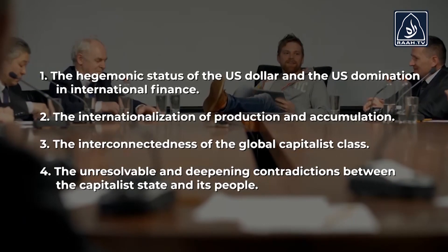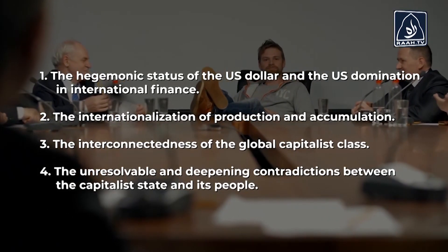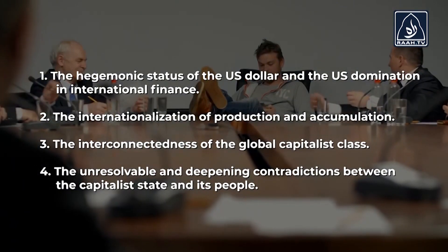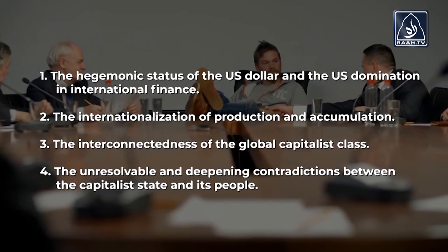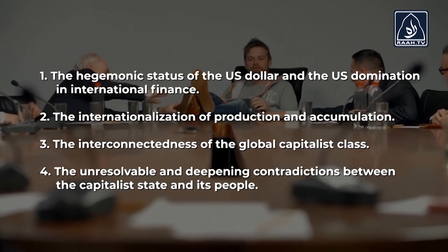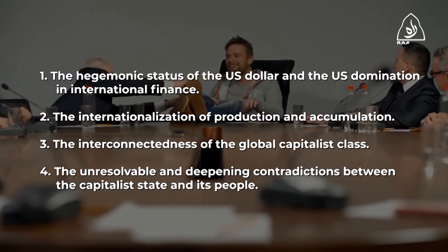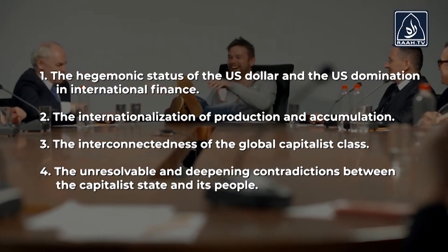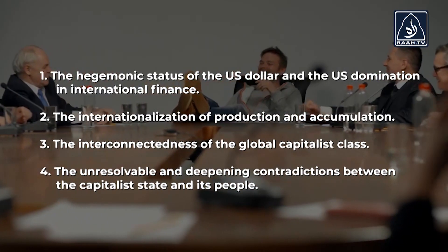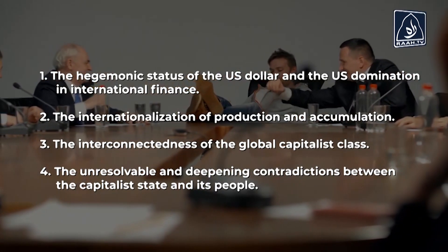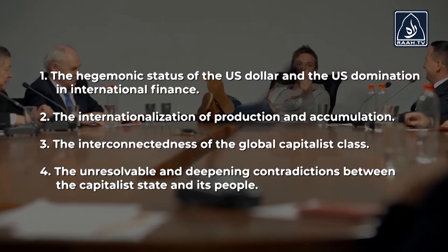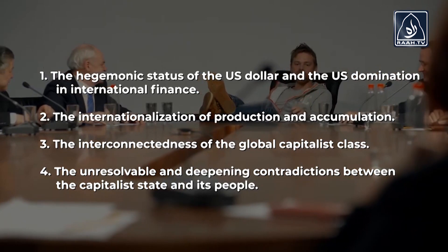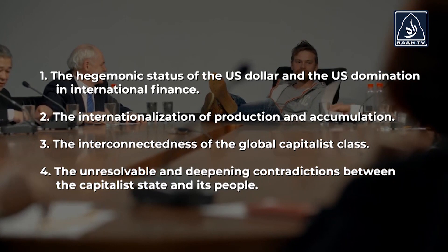Pao Yuching describes four characteristics of the current phase of imperialism: one, the hegemonic status of the US dollar and US domination in international finance; two, the internationalization of production and accumulation; three, the interconnectedness of the global capitalist class; and four, the unresolvable and deepening contradictions between the capitalist state and its people. Let's go over these characteristics.